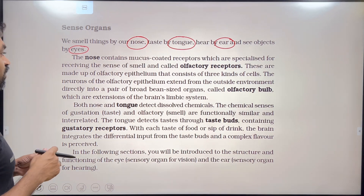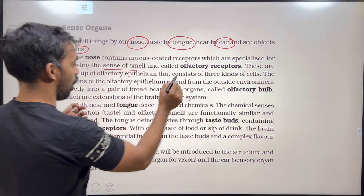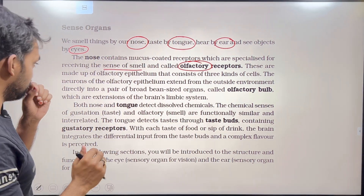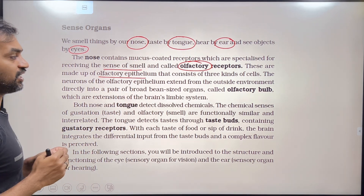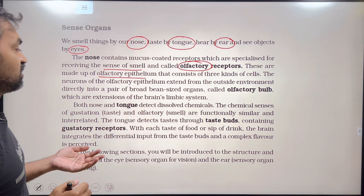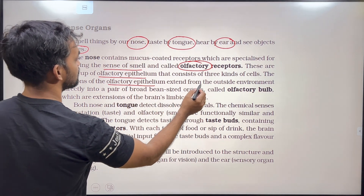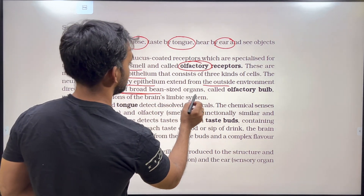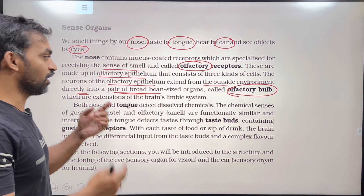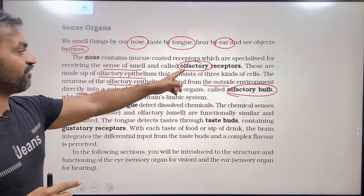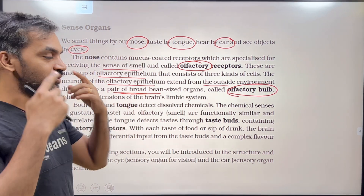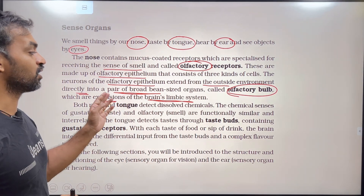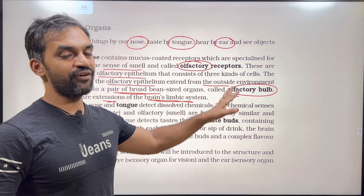Receptors specialized for receiving the sense of smell are called olfactory receptors. These are made up of olfactory epithelium that consists of three kinds of cells. The neurons of the olfactory epithelium extend from the outside environment directly into a pair of broad bean-sized organs called the olfactory bulb, which are extensions of the brain's limbic system.